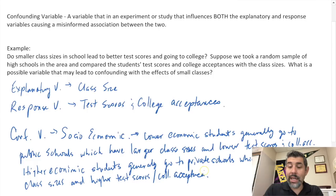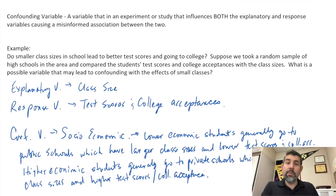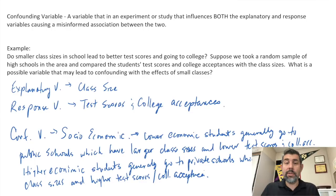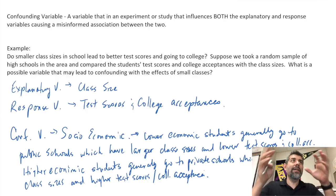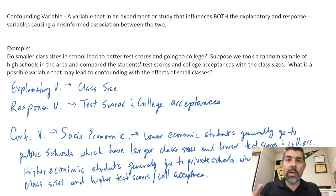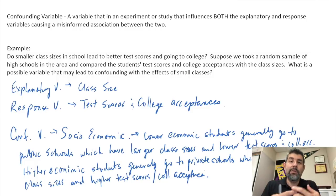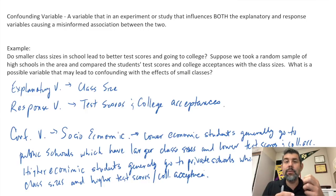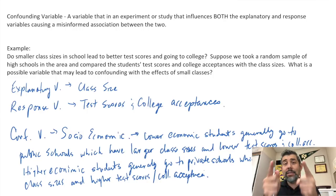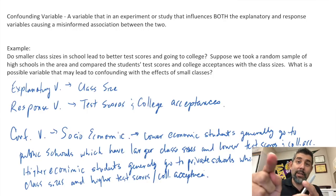You can see how higher-economic students going to private schools relates to higher test scores, and vice versa for socioeconomics. That is a confounding variable — it's a variable that confounds things, making us think something's going on when it might not really be. There might not be a direct connection between class size and test scores; the confounding variable just makes it seem so because it influences both the response and the explanatory variable. There you go — this was confounding variables. Don't get confounded later, bye!